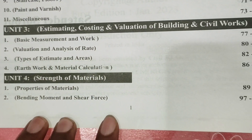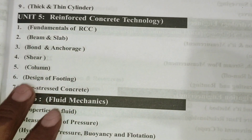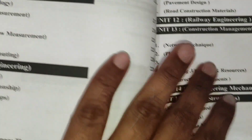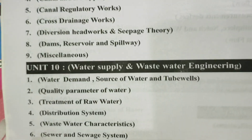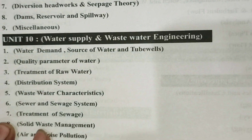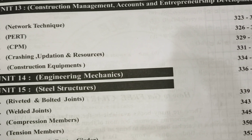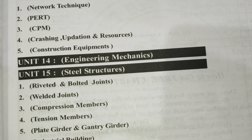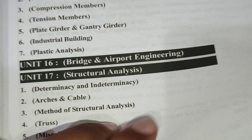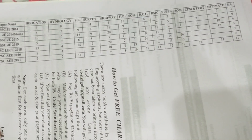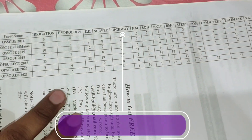Subjects covered include soil mechanics, building materials, estimation and costing, strength of materials, RCC, FM, surveying, hydrology, irrigation, water supply and wastewater engineering, environment, highway, railway, construction management, accounting, entrepreneurship, engineering mechanics, steel structure, bridge, airport, and structural analysis. You can also check the previous year subject weightage.